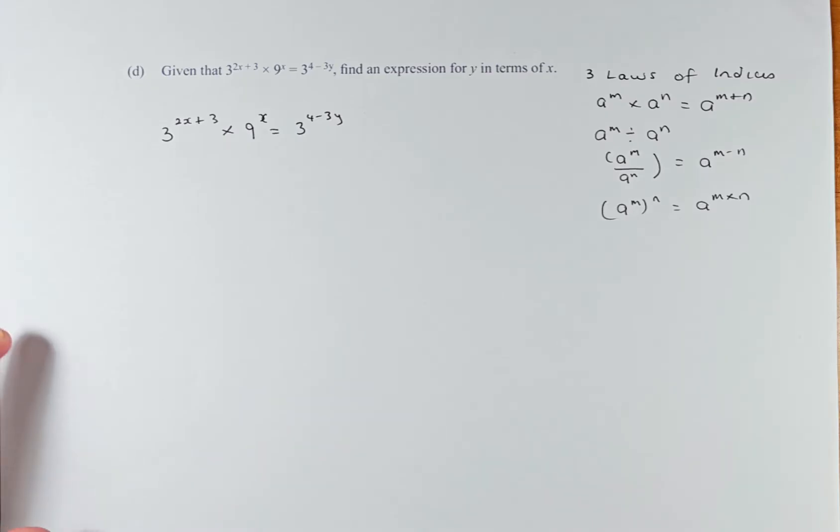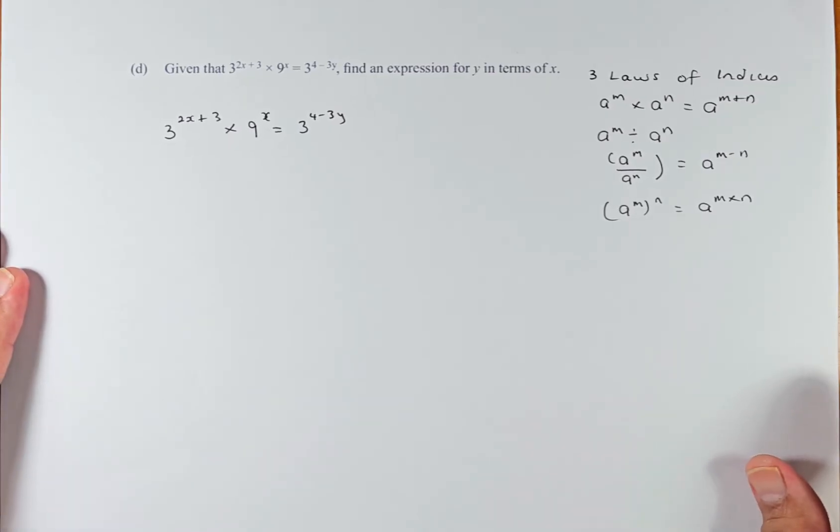Question 3D sounds like this: Given that 3^(2x+3) times 9^x equals 3^(4-3y), find an expression for y in terms of x.